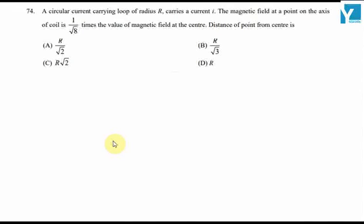A circular current carrying loop of radius R carries a current i. The magnetic field at a point on the axis of the coil is 1 by root 8 times the value of magnetic field at the center. The distance of the point from the center is?